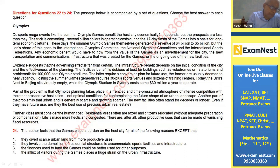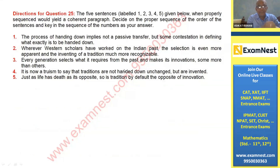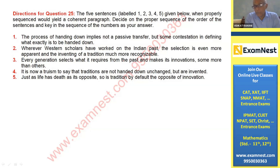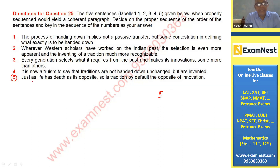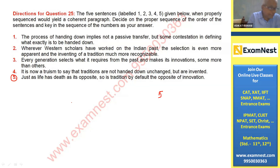The parajumble has five sentences. Looking at the most general statement, number five should be the first sentence: just as life has death as its opposite, so tradition is by default the opposite of innovation. Then number four follows — it is now a truism to say that traditions are not handed down unchanged but are invented. If they are invented, then they must be something novel.